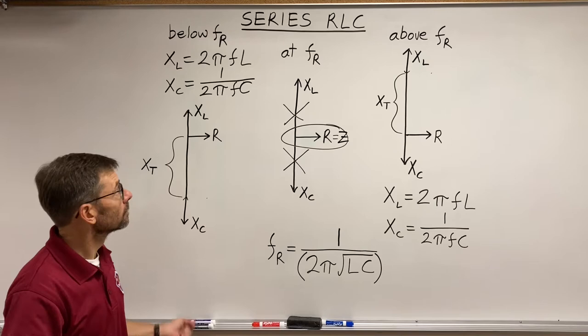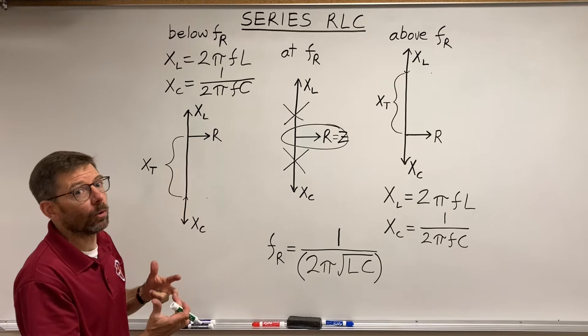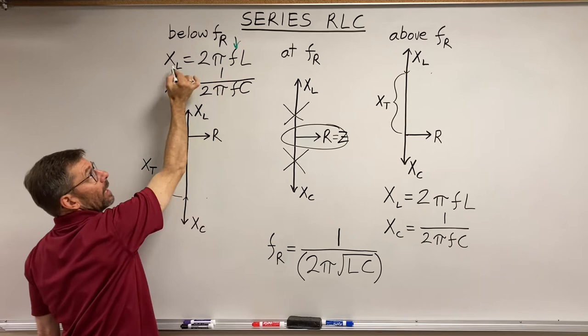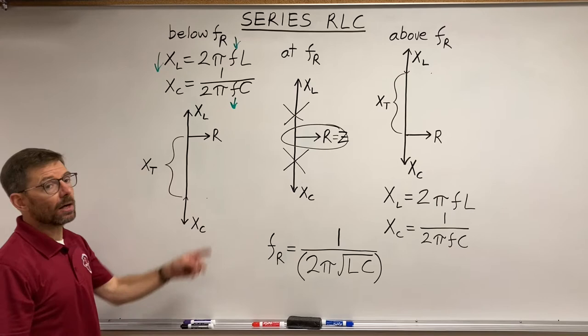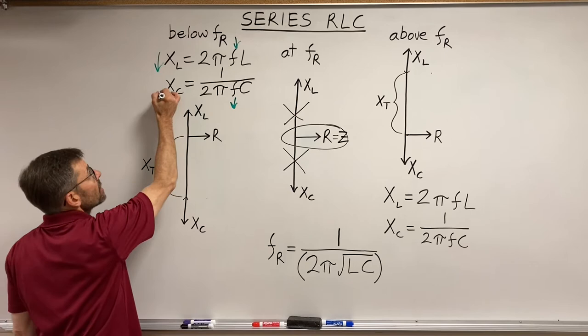Let's say frequency went down. From wherever it was and it went down, what's the effect? Well, frequency goes down, XL goes down. XC, this is the denominator, so the inverse relationship, XC would go up.